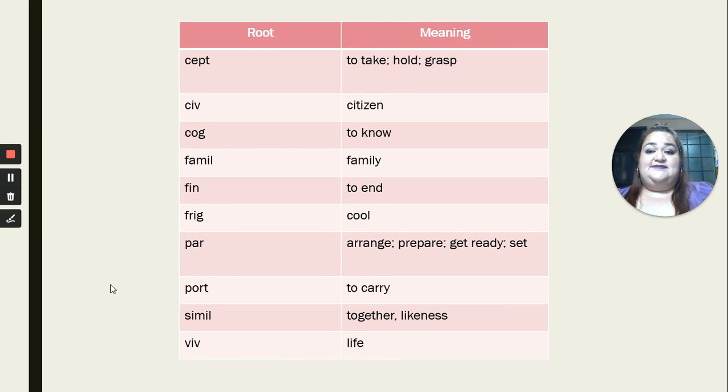We have cept, that means to take, hold, grasp. Civ, that means citizen. Cog, that means to know. Famil, that means family. Fin, that means to end. Frig, that means to cool. Par, that means arrange, prepare, get ready, set. Port, that means to carry. Simil, that means together, likeness. And viv, that means life. So this is practically what you have in your book. These are the roots, and you need to complete the exercises that you have in there.